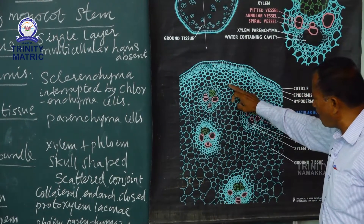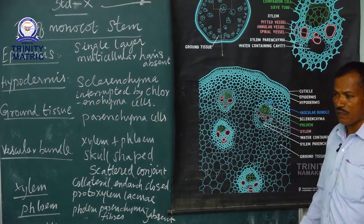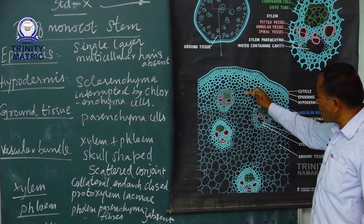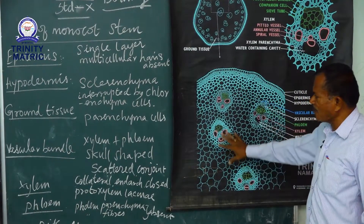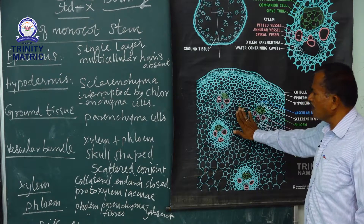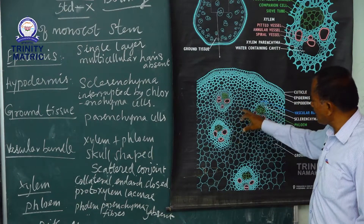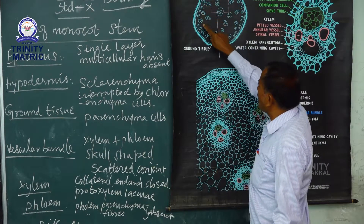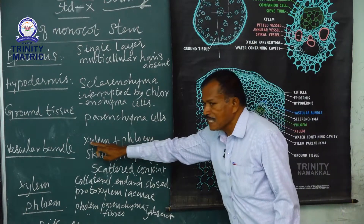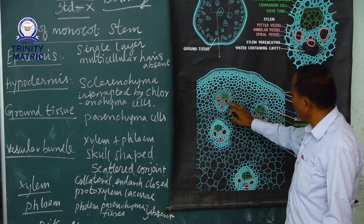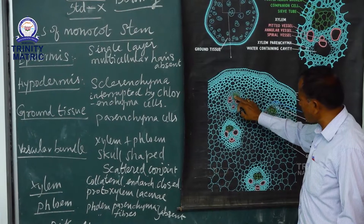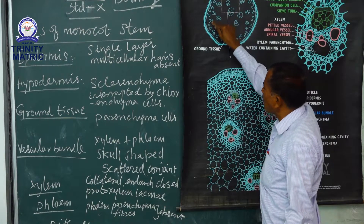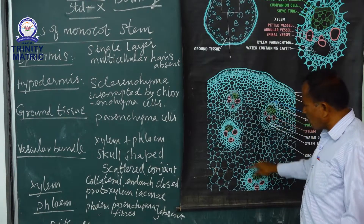Below the hypodermis is the ground tissue. This entire layer is called ground tissue — not cortex. It is made up of thin-walled parenchymatous cells. Within this ground tissue, a number of vascular bundles are embedded. These vascular bundles consist of xylem and phloem. The vascular bundles are embedded in the ground tissue.